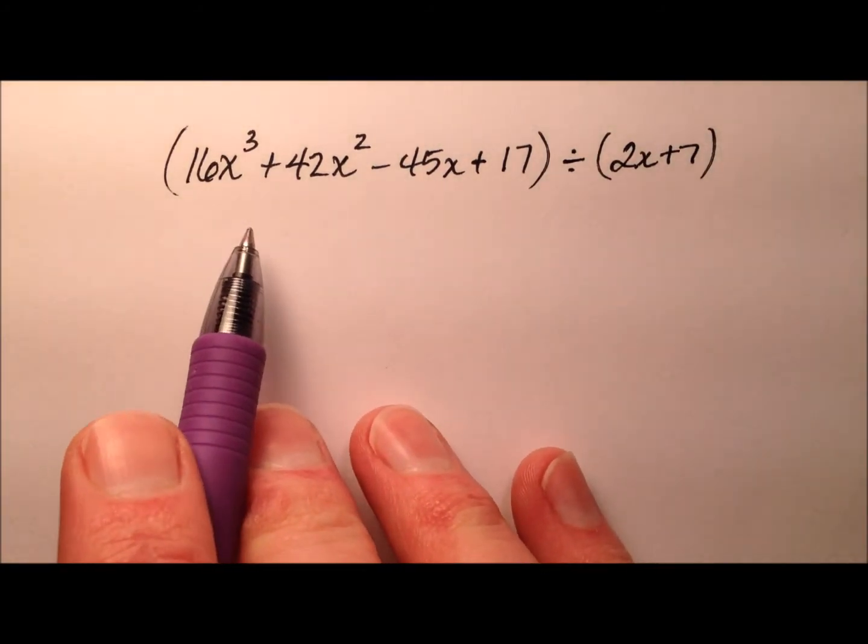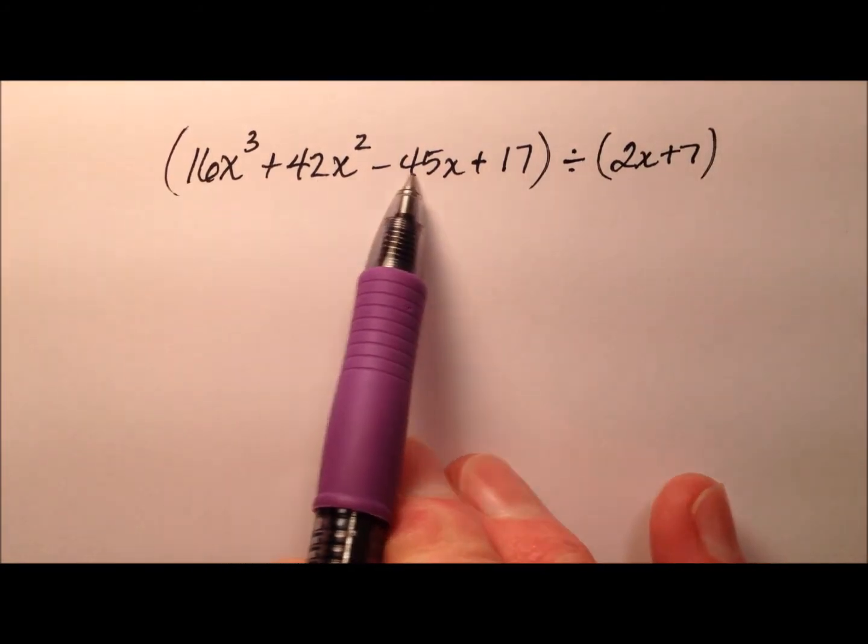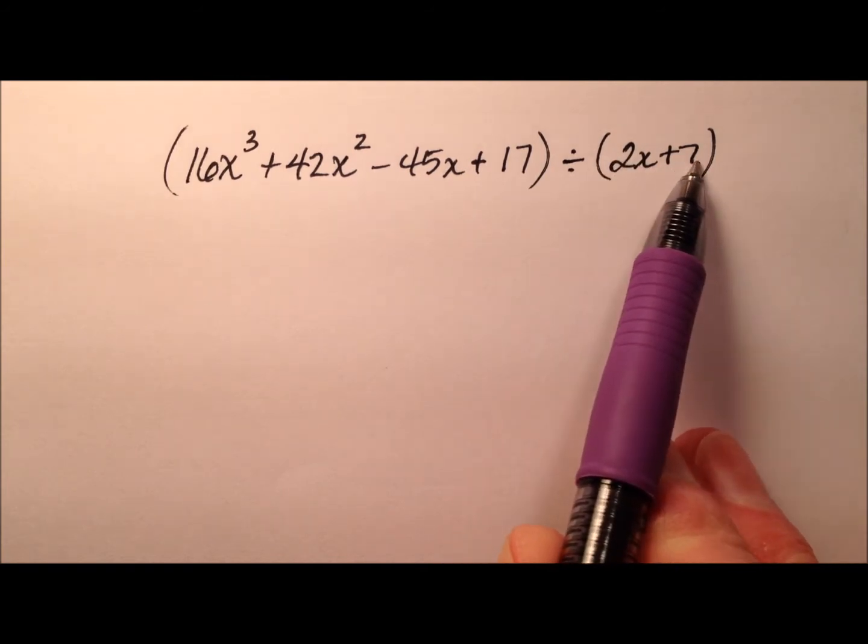In this example, I'm going to use synthetic division to divide this polynomial by the linear binomial 2x plus 7.